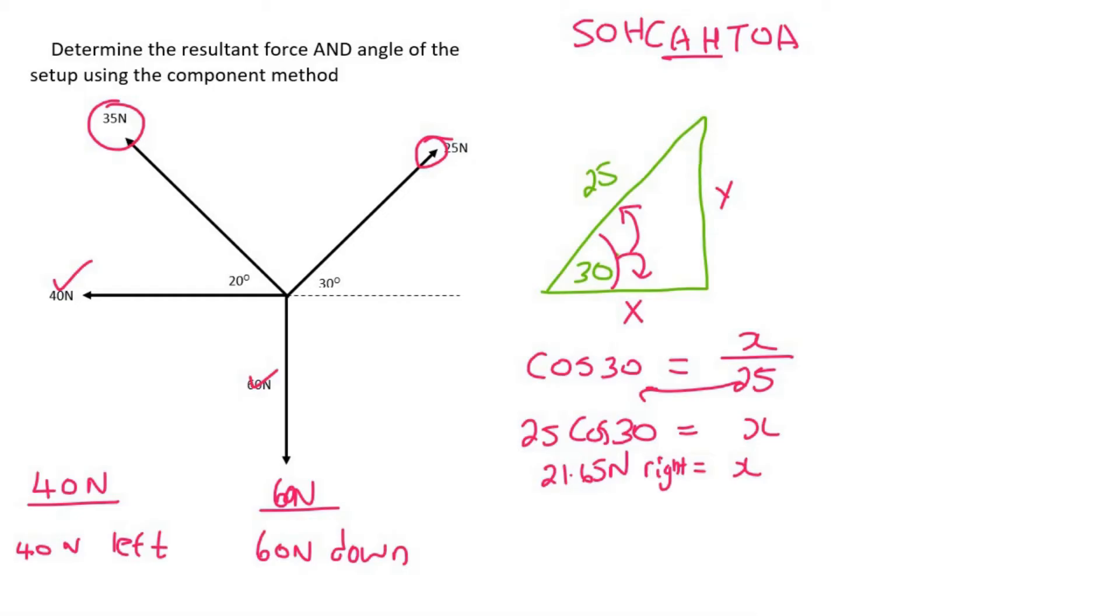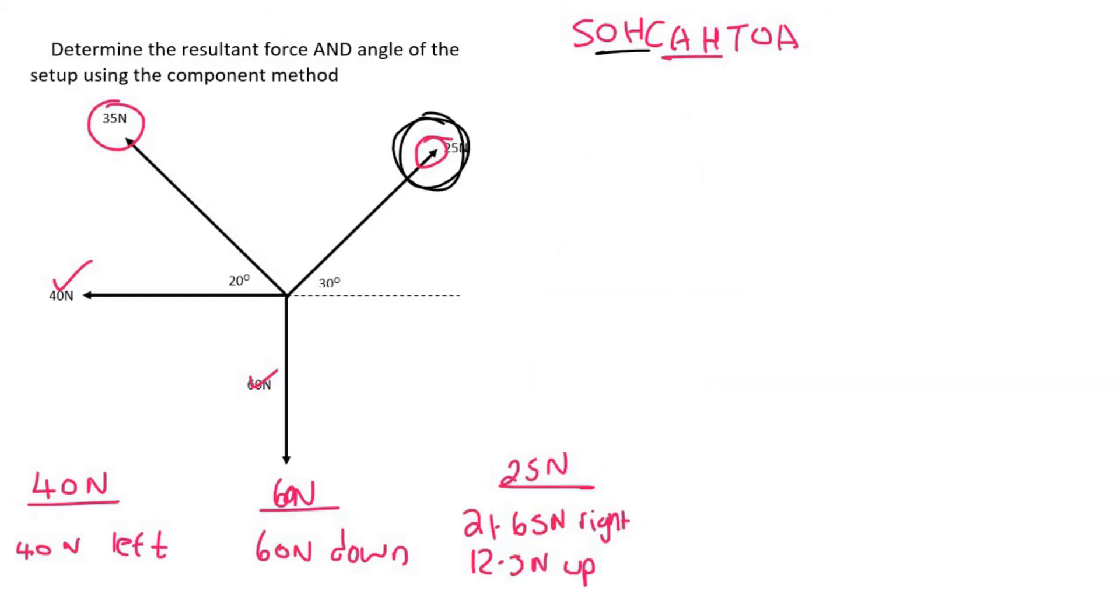Now we can do the y. You could realize that y is the opposite and this is the hypotenuse, so that is sin. We can say sin 30 equals the opposite over the hypotenuse. Then we can get y alone by multiplying the 25 up, and so we'll find that y is equal to 25 sin 30, which is equal to 12.5 Newtons. If you look at this arrow, it's going more up, so we can say up. And so I've summarized the information for the 25 Newton over here.